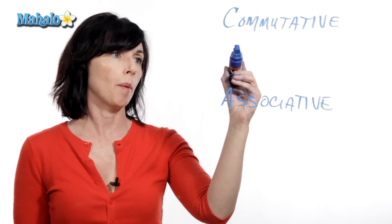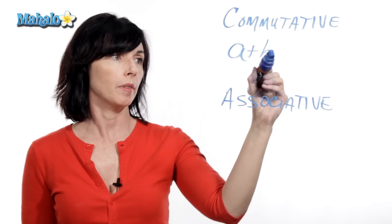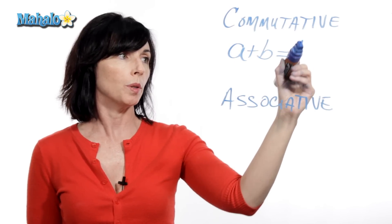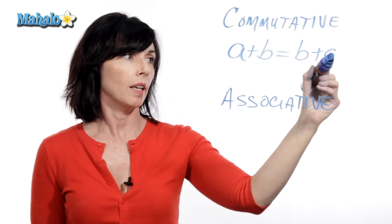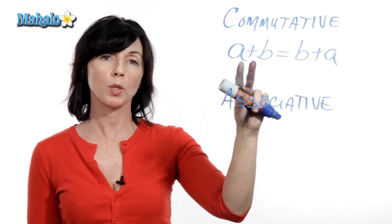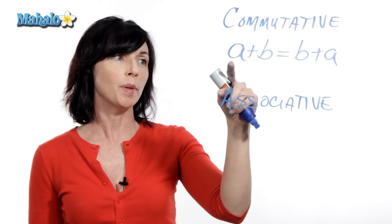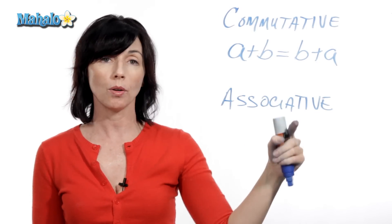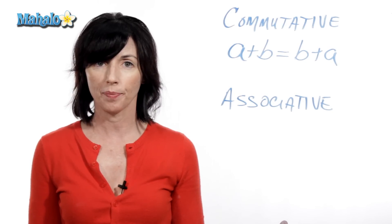Here's what the commutative property says. If I have a plus b, it means that that will be equal to b plus a. The property says that these numbers will commute. I can add them in this order or I can add them in that order and I'll still get the same answer.